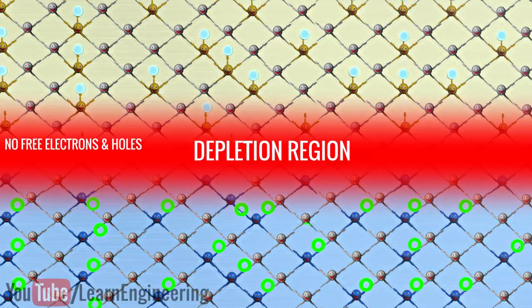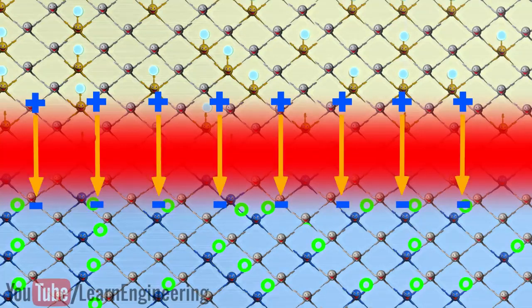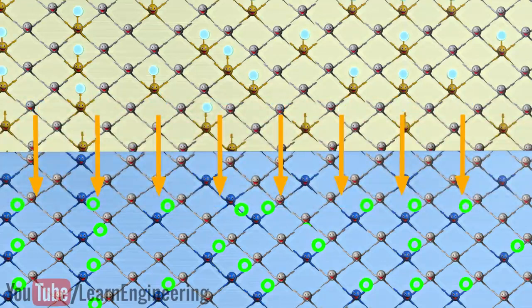Due to the electron migration, the n-side boundary becomes slightly positively charged, and the p-side becomes negatively charged. An electric field will definitely be formed between these charges. This electric field produces the necessary driving force. Let's see it in detail.